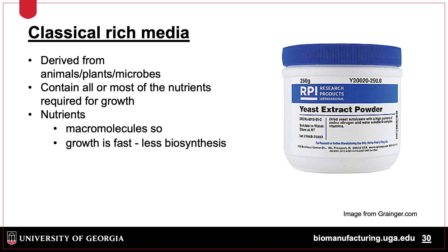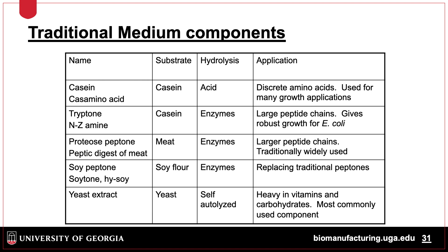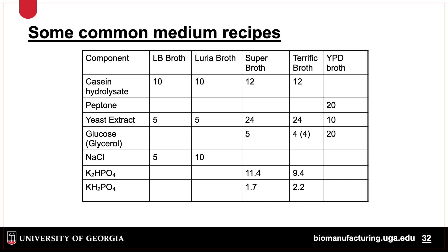Rich media is commonly used in research labs and in cell culture for larger scale fermentations. This media contains all of the nutrients required for growth and is comprised of proteins and protein fragments, along with other factors. Rich media supports robust growth because cells don't have to manufacture key components for growth, as they can be directly derived from the media. There are several types of rich media, including casein, tryptone, peptones, and yeast extract. They are all prepared different ways but are essentially hydrolysates of larger proteins.